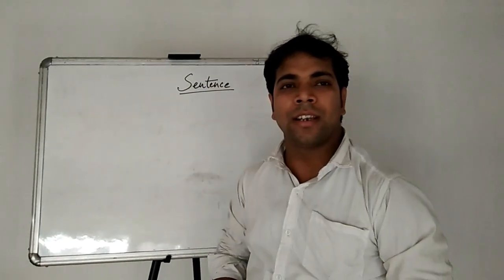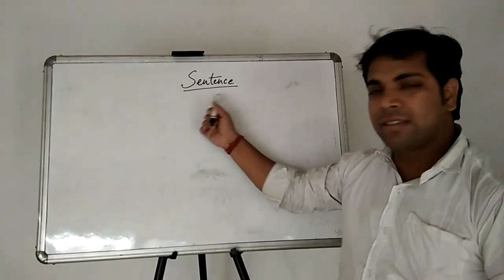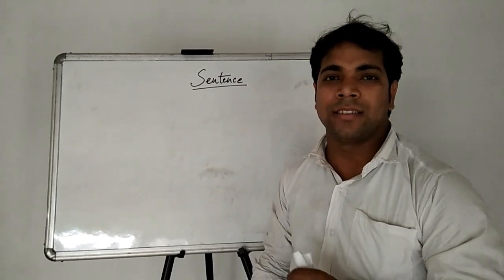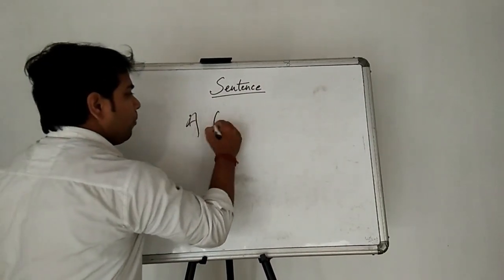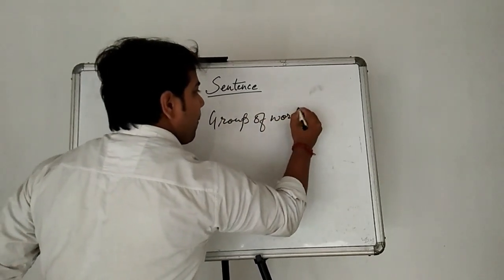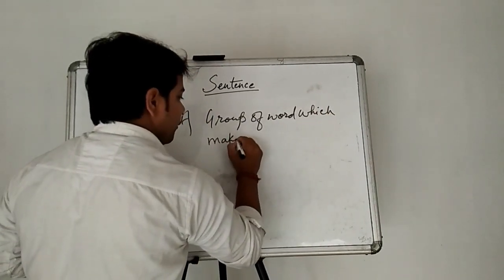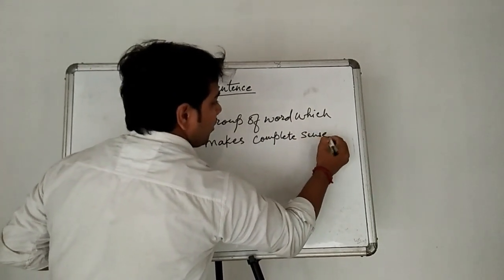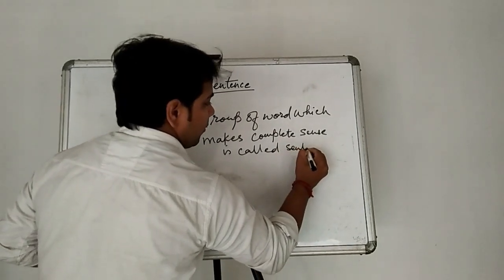Hello friends. Welcome here in Easy English Classes. We are going to read here about sentence. The basic part of English is sentence. What we call sentence? A group of words which makes complete sense is called sentence.